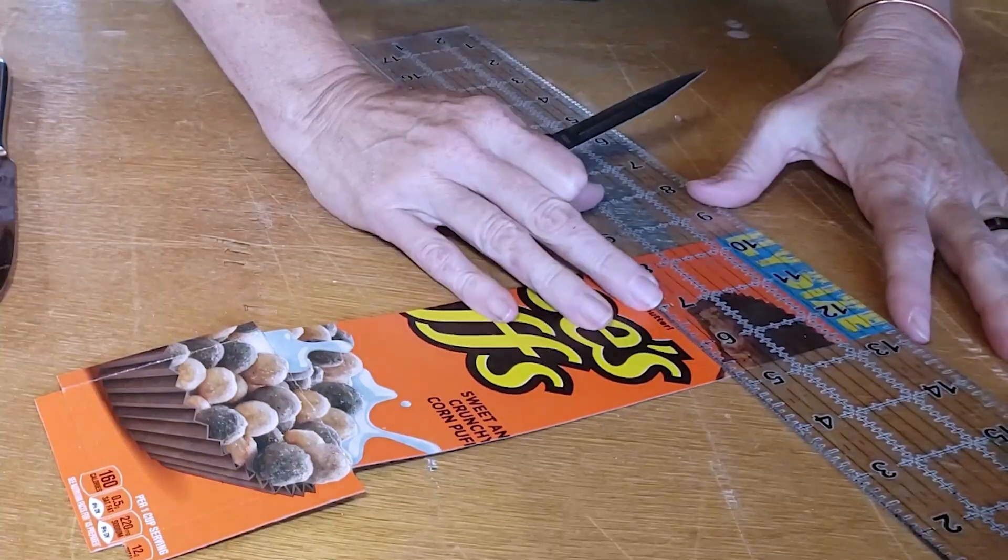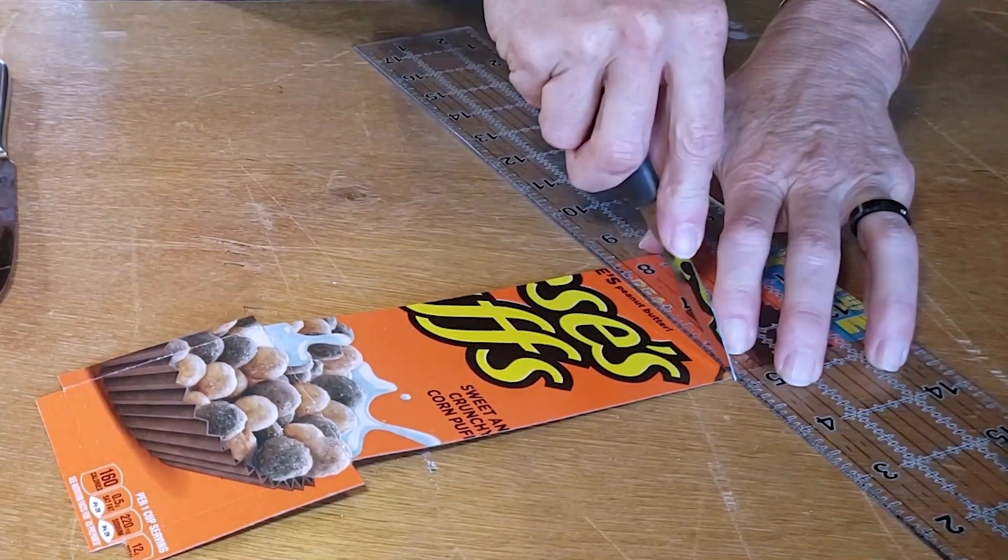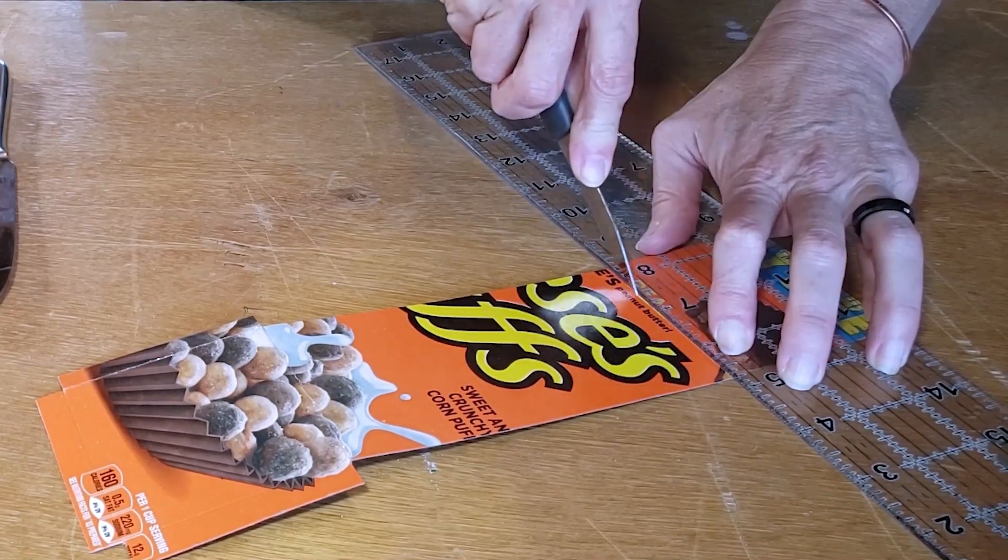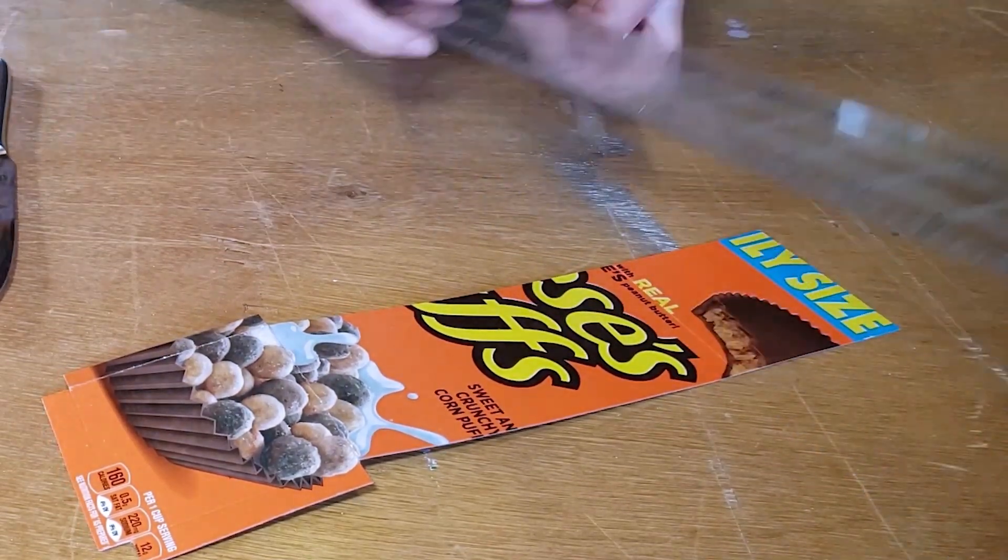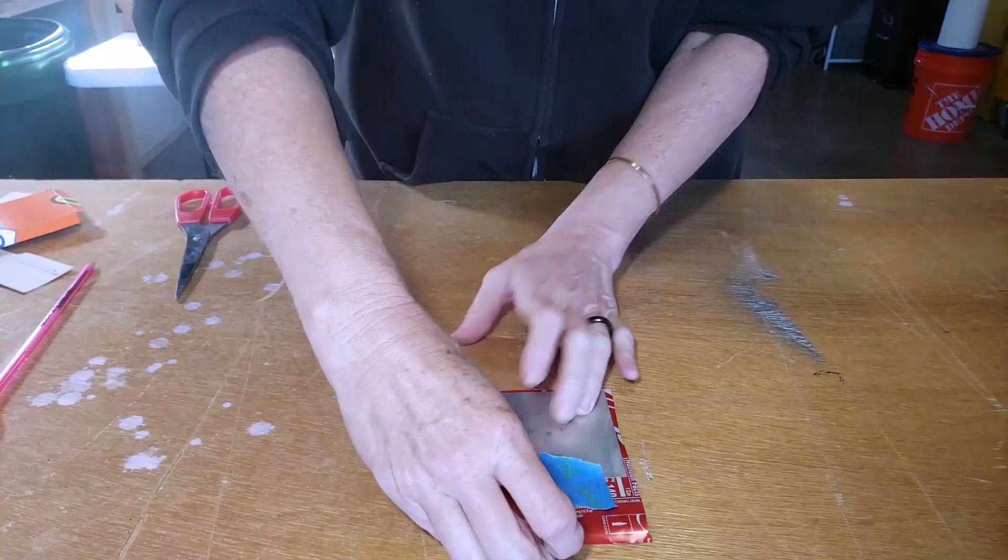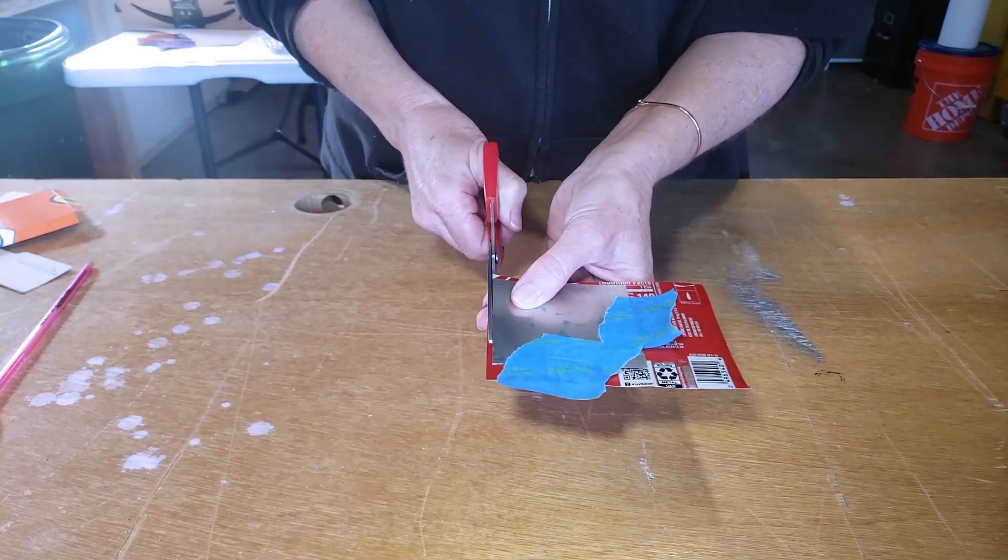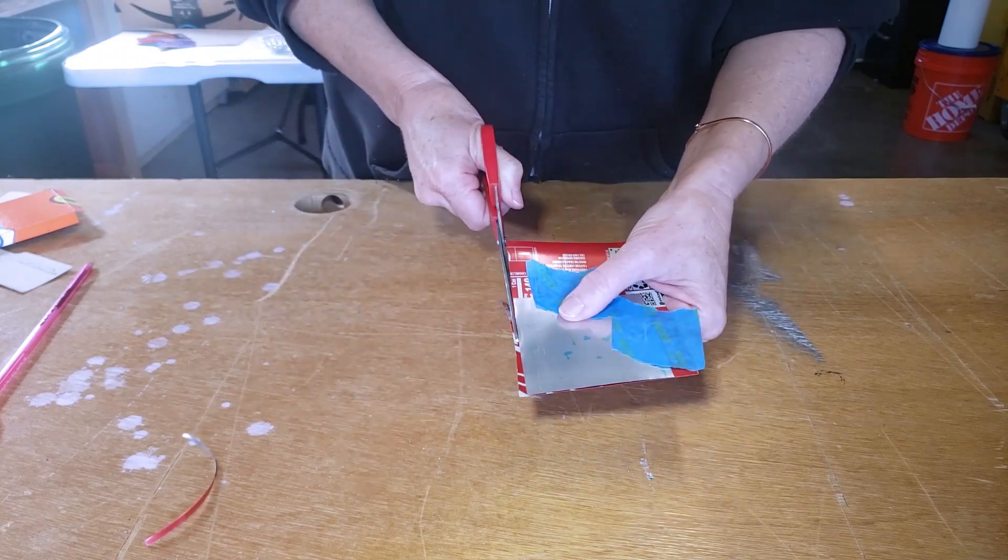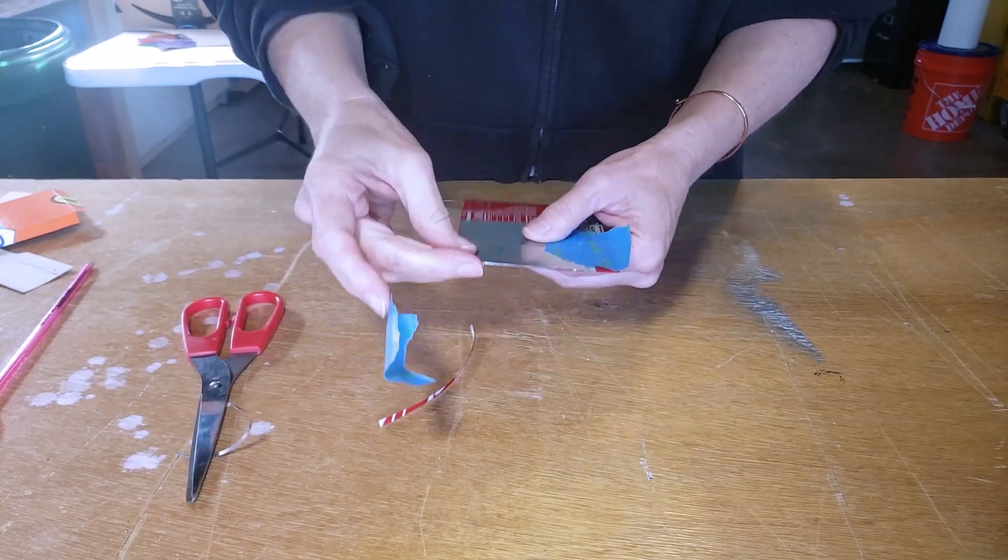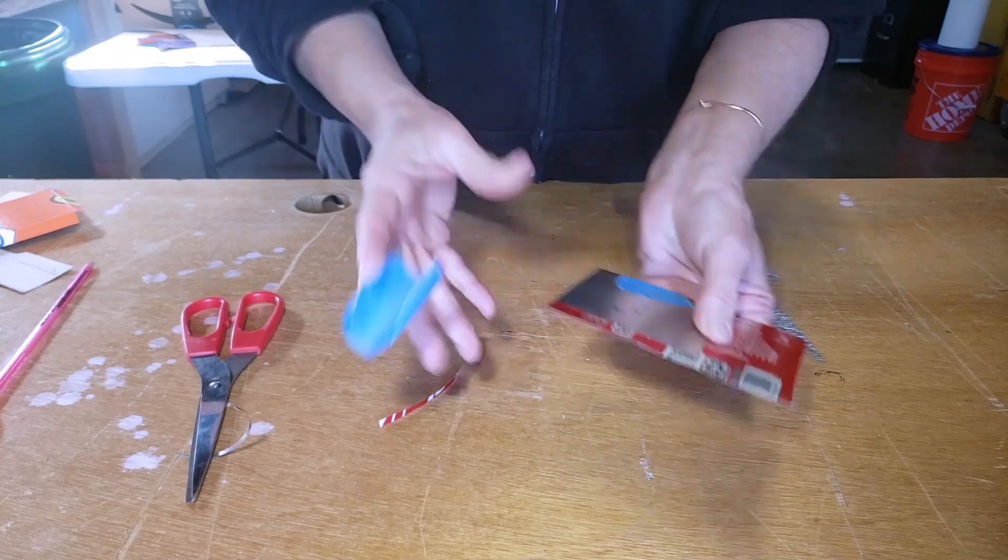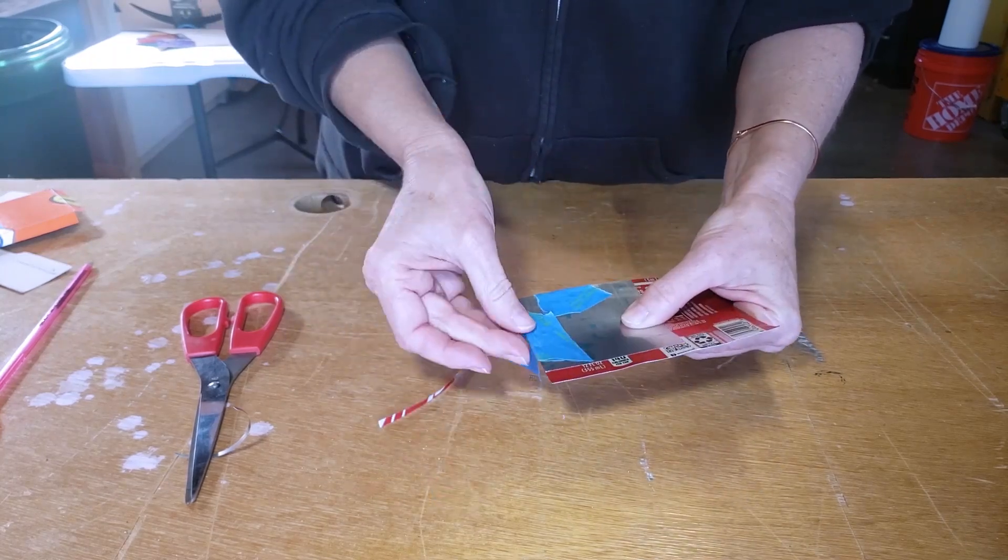So once I have the cardboard pieces all cut out I'm going ahead and I'm just using a regular knife to score my fold lines. Next I'm cutting out my flattened aluminum sheets into six three inch squares. If you make a different shape of box you'll just want to make your aluminum pieces to match all the sides and top and bottom of your box.